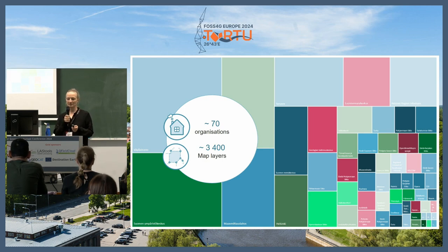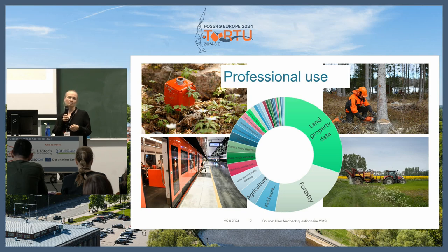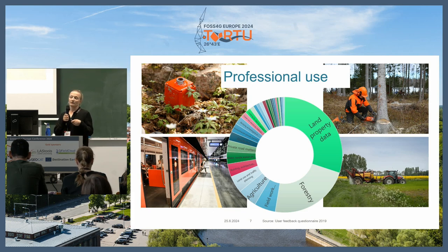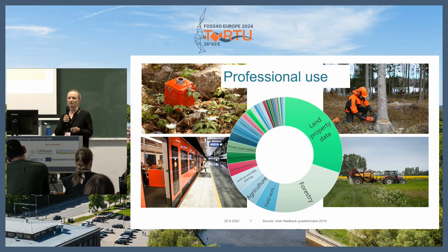Some of the biggest data producers are the Finnish Environmental Institute and the Traffic Institute. Part of the 3,400 layers are duplicates in the sense that it includes both WMS and WFS or OGC API features — raster and vector — so let's say around 2,000 completely different map layers with different information. Land property data is one of the most popular for professional users, but there's also agriculture, forestry, and fieldwork uses.